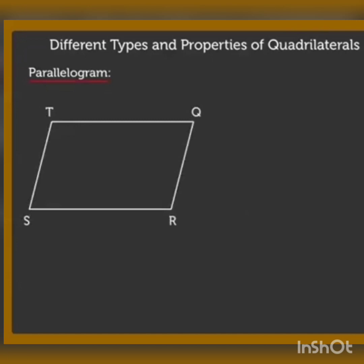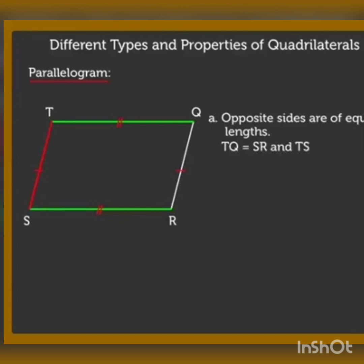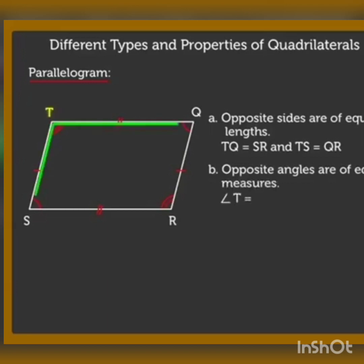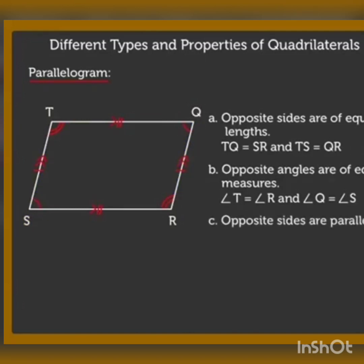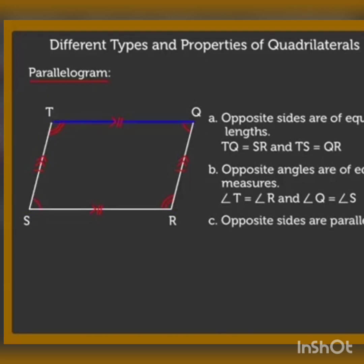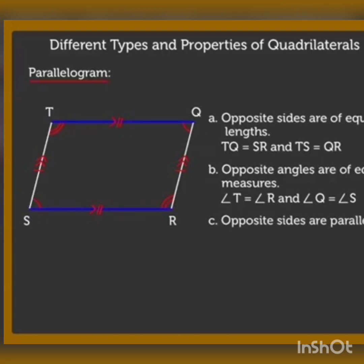Now comes parallelogram. As you can see in the picture, opposite sides are of equal lengths — opposite sides are equal and also parallel to each other, just as in a rectangle. Opposite angles are of equal measurement: angle T equals angle R, and angle Q equals angle S, but these are not 90 degrees as in a rectangle. That is the key difference between rectangle and parallelogram — in a rectangle each angle is 90 degrees, but here opposite angles are equal but not 90 degrees.